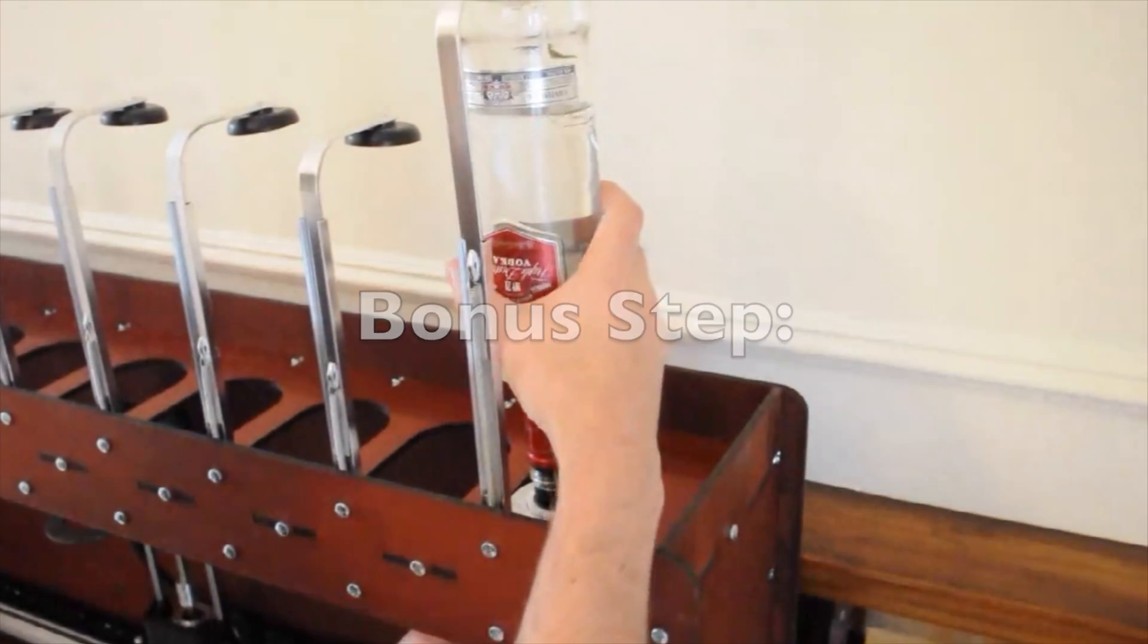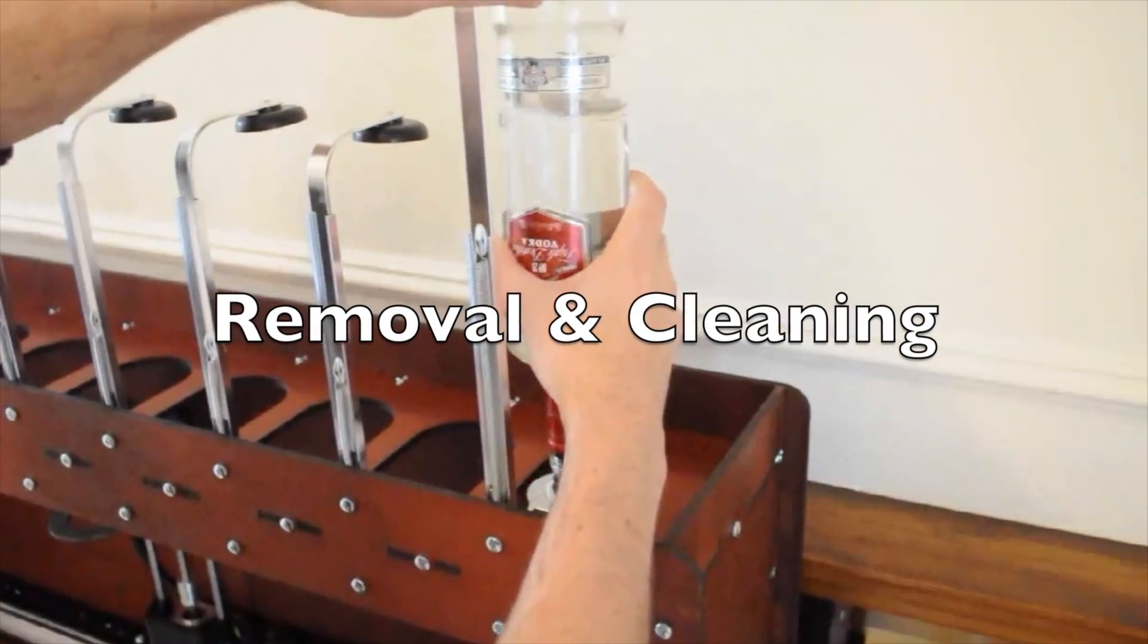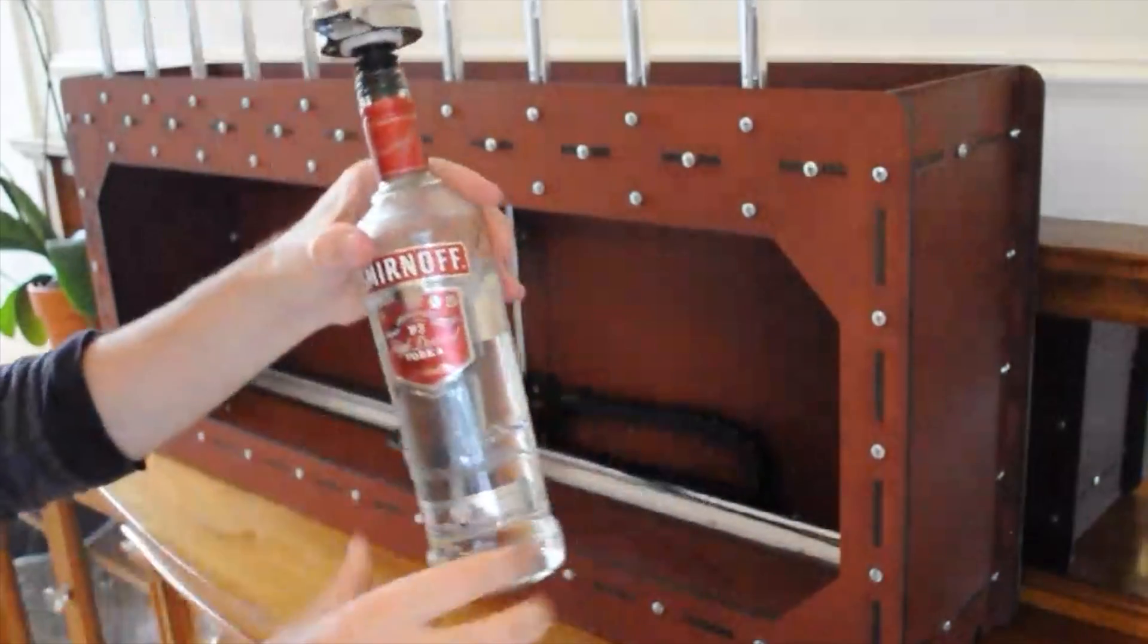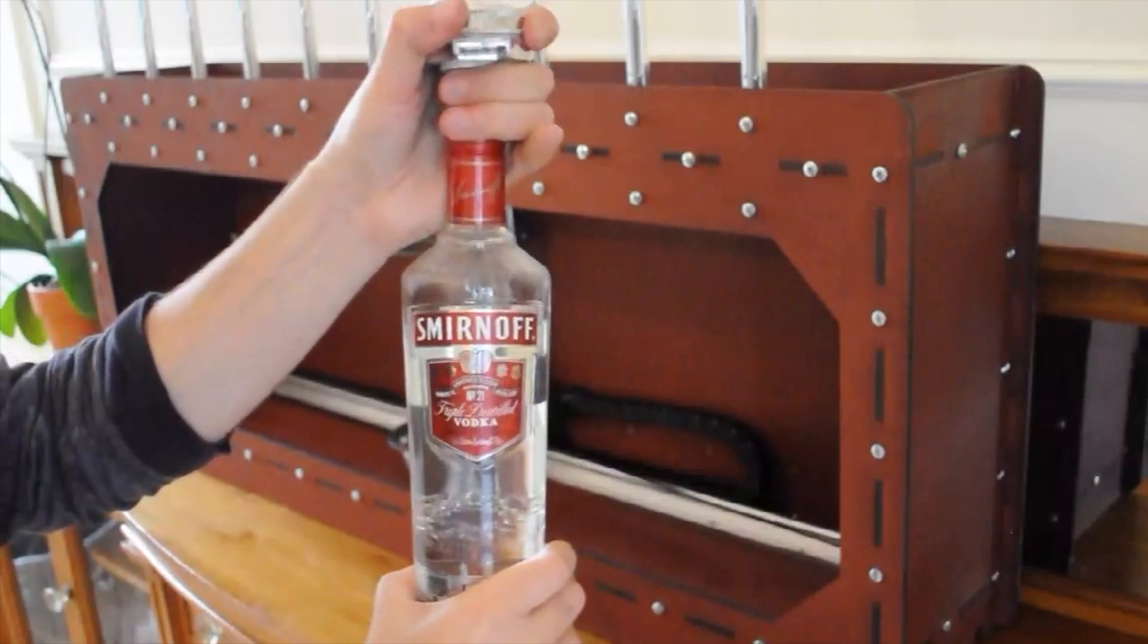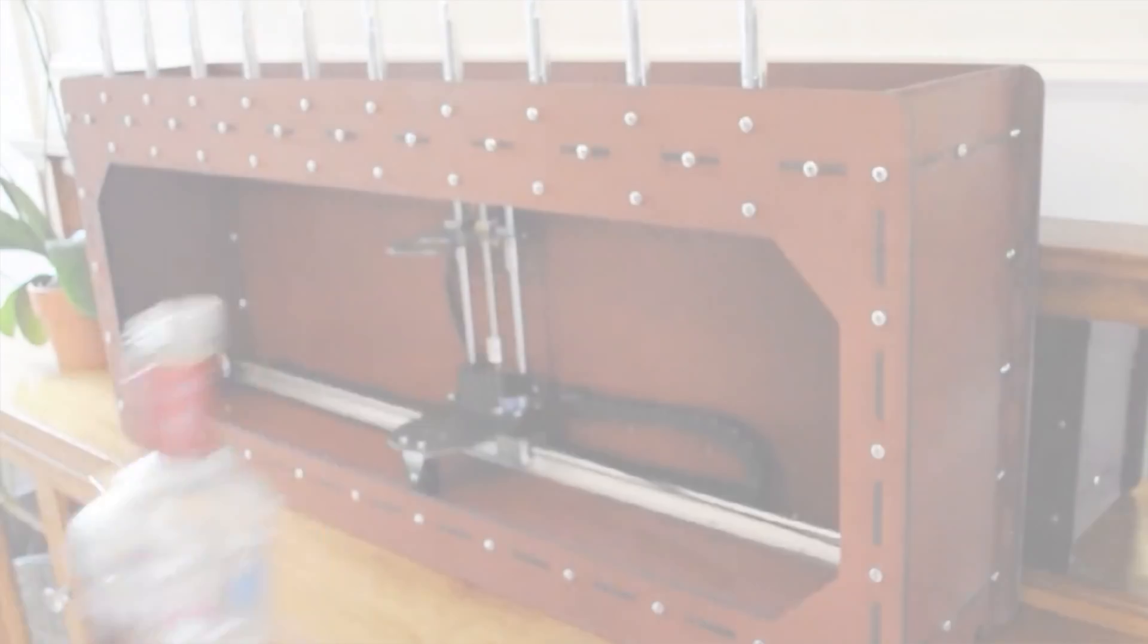As a bonus step, let's see how easy it is to remove the dispensers for cleaning. Simply release the pin underneath, remove your bottle from above, flip right side up to drain, and remove your dispenser, which can be washed under warm water or in your dishwasher.